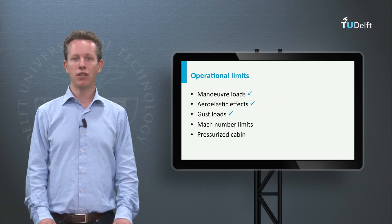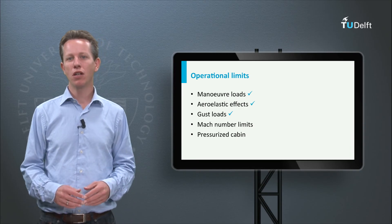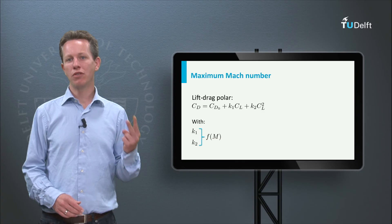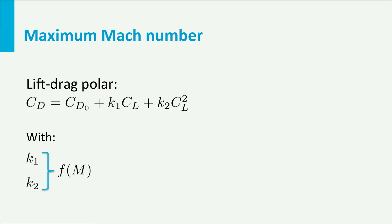The lift-drag polar we have used so far was either a one-term or a two-term polar, with the factors k being constant. However, what I did not yet tell you is that these factors k gradually change when the Mach number is increased. At some point, when the speed of sound is approached, the aerodynamic behavior can change quite drastically. Even at subsonic speeds, the airflow can locally become supersonic.